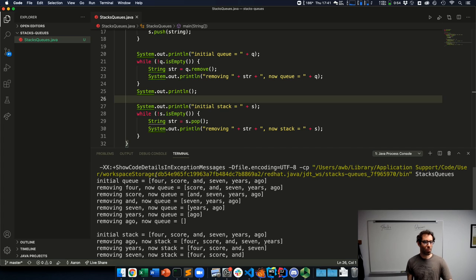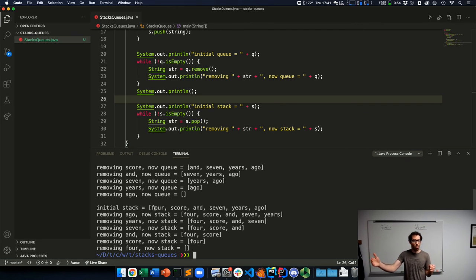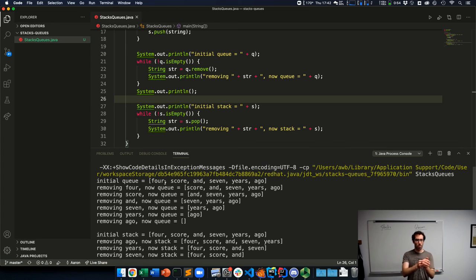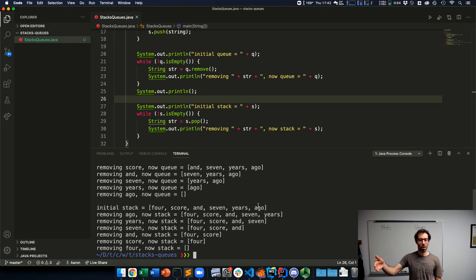We can see that the initial queue has the data that we added to it: four score and seven years ago. Each time we remove, we remove from the front of our queue. Our stack prints it out in the same order that the queue does, but the top of the stack, the place that we are removing from, is the end of what it's showing here. So our queue, we added four score and seven years ago, and ago is added to the end and then we remove from the front. So we remove four and then score. Whereas with a stack, we remove the most recently added value. Our stack is last in first out, so we remove ago, years, seven, and score four. We actually see that these are being removed in the reverse order that they were added.